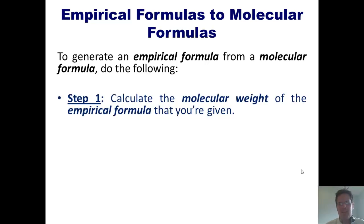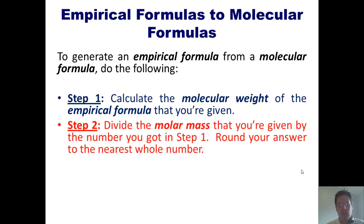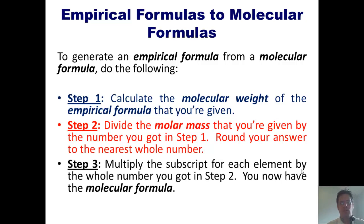Step one, calculate the molecular weight of the empirical formula that we're given, and we're always given one in a problem. Step two, divide the molar mass that we're given, also comes in our problem, by the number we got in step one, and round that to the nearest whole number. Step three, multiply the subscript of each element in our empirical formula by the whole number we got in step two. That is now the molecular formula. Confused? Don't worry. I'll show you an example.